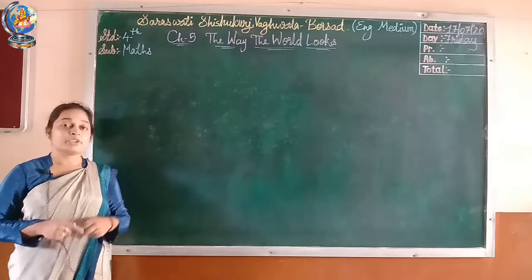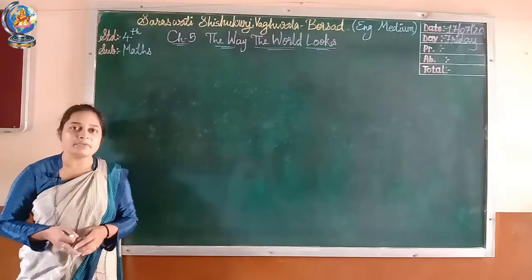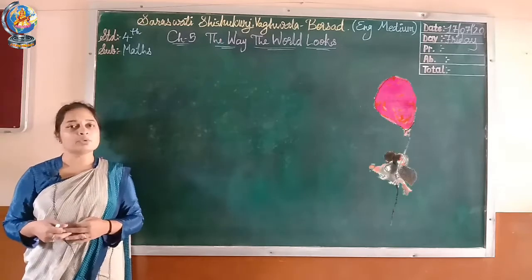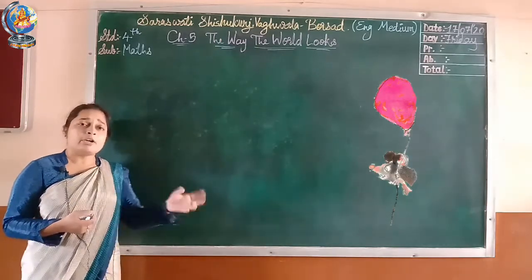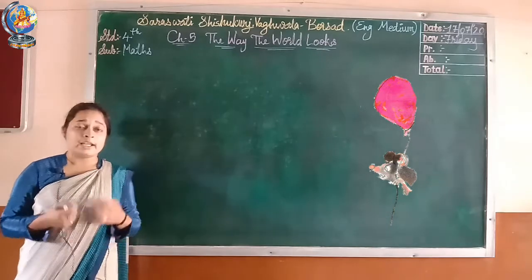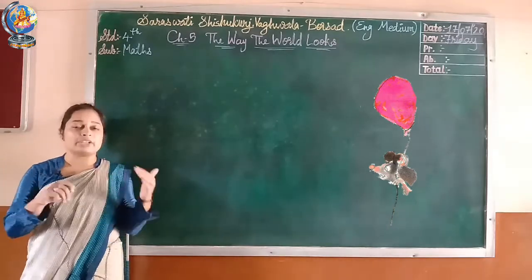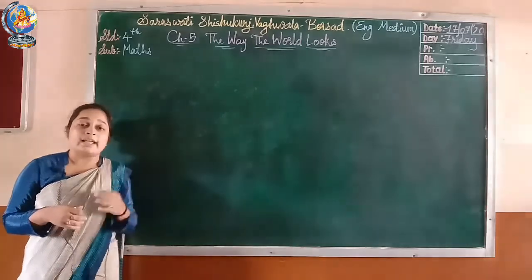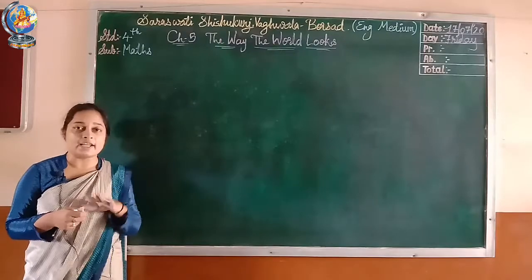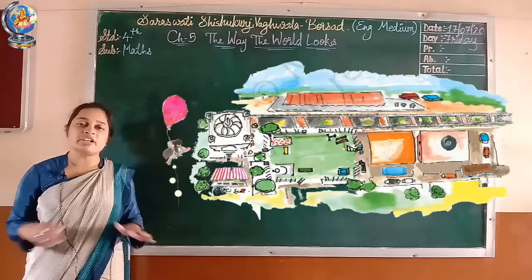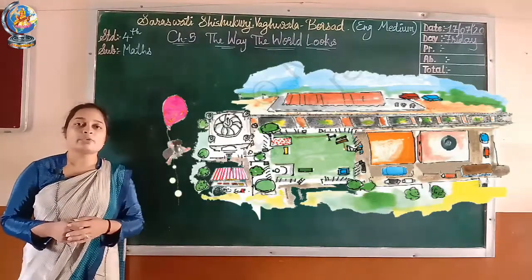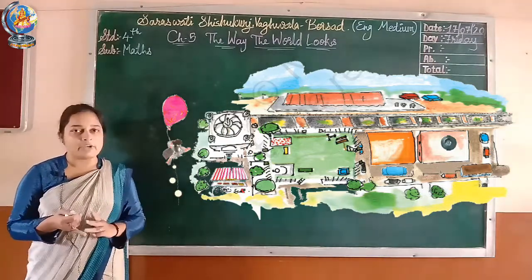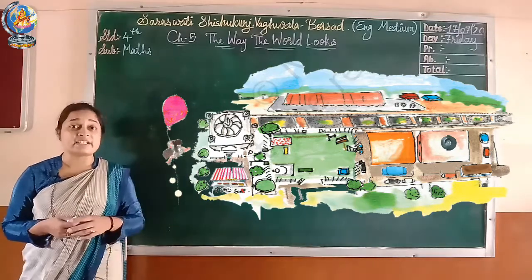The way the world looks. As you all know, in the previous video we had seen a story of a Gappu mouse. He climbed on a balloon string and then he had seen the view of that room. Later on, that balloon went out of the room. As the balloon went higher and higher, he had seen the view surrounding his house — Gurudwara, sweet shop, railway track and Suhasini's house.